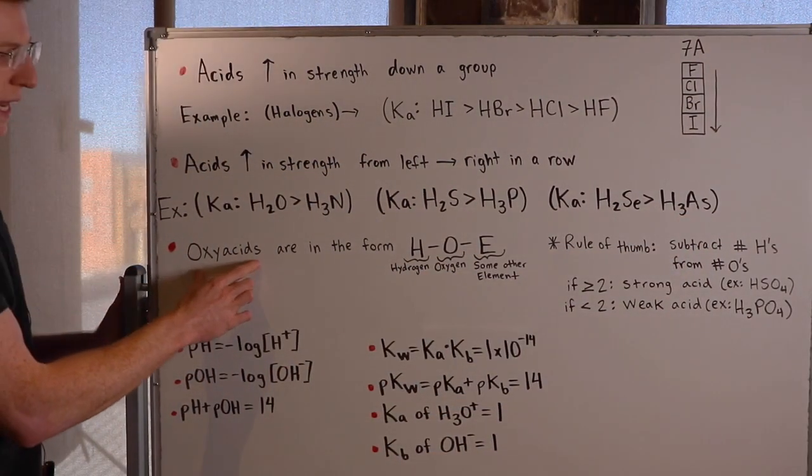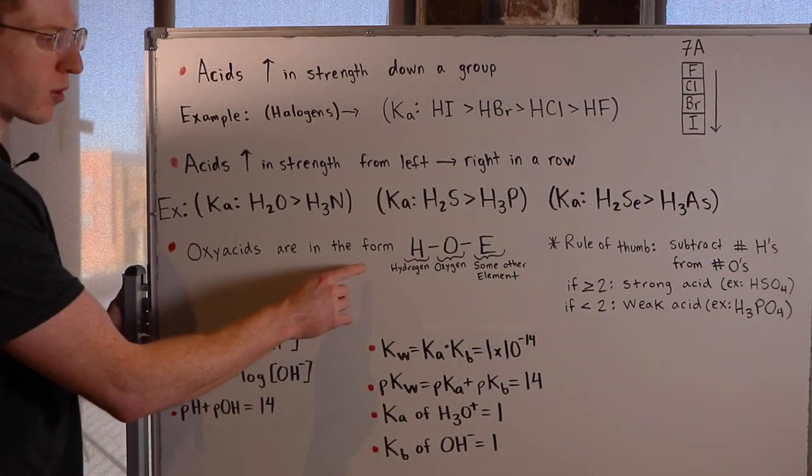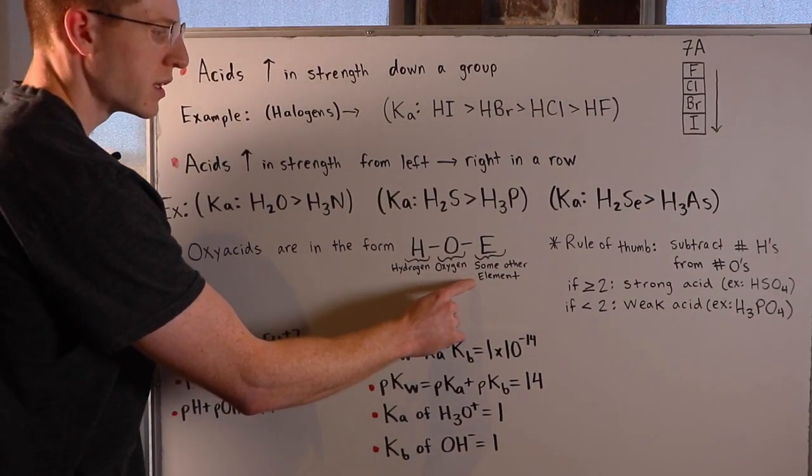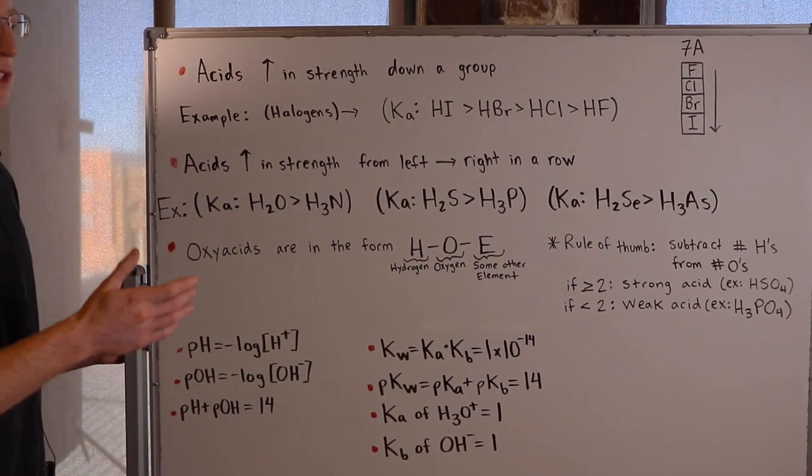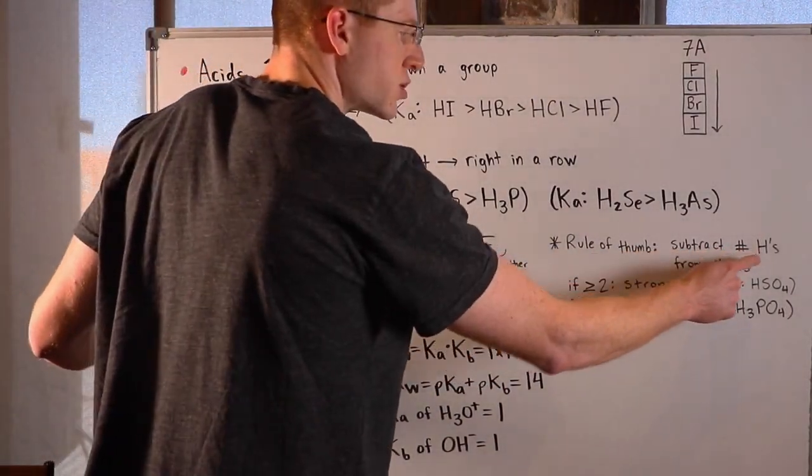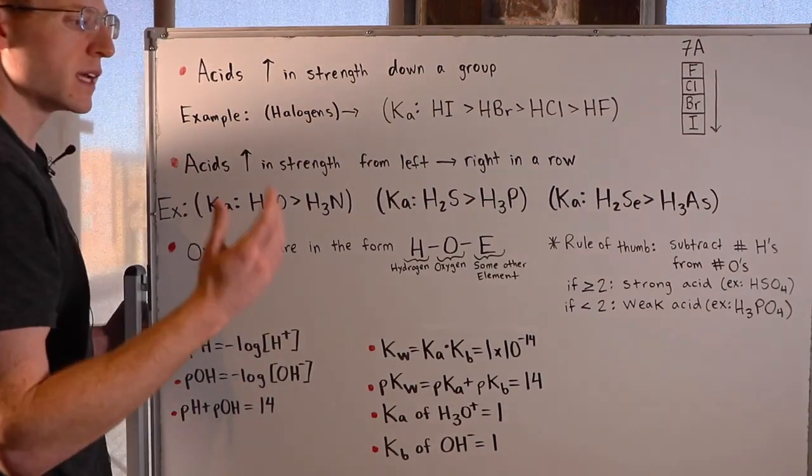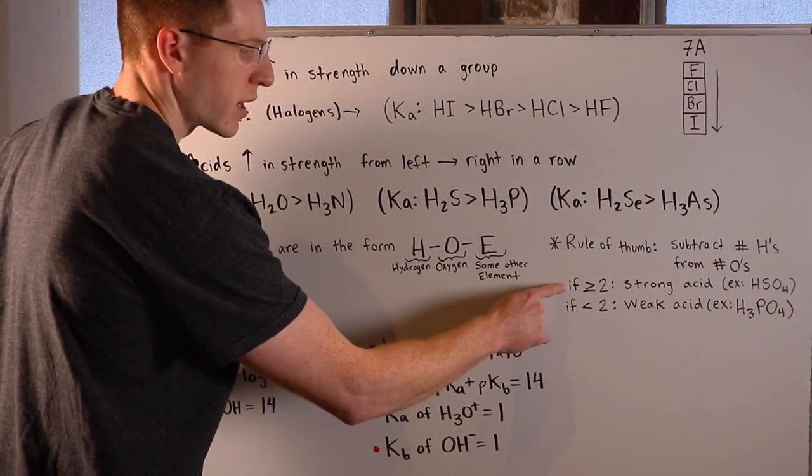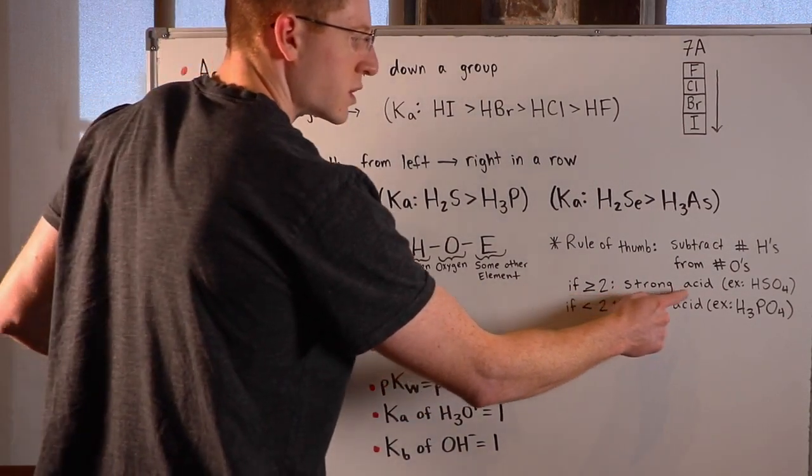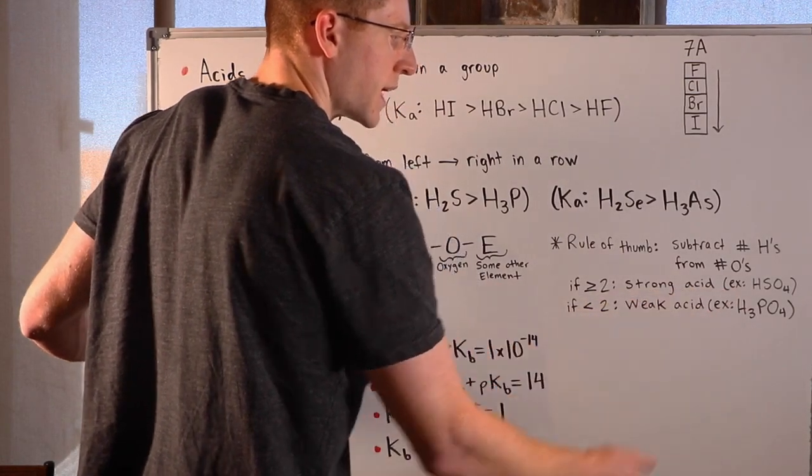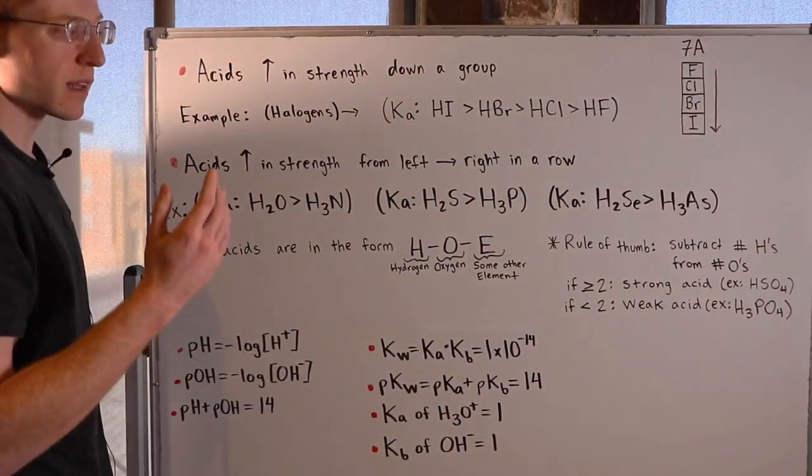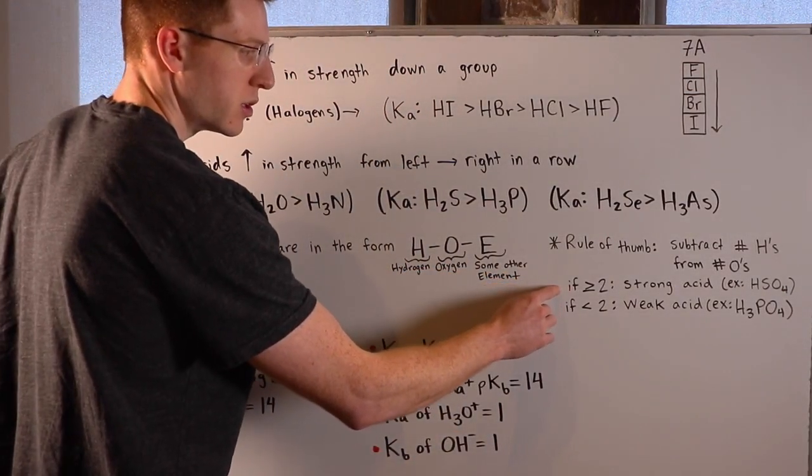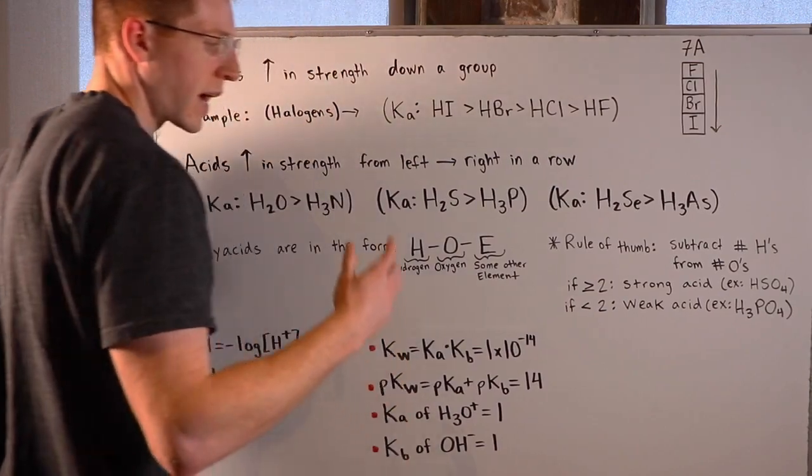Next let's look at oxyacids. Oxyacids are in the form hydrogen, oxygen, and some other element. A good rule of thumb for oxyacids is that if you subtract the number of hydrogens from the number of oxygens in the acid, and you get a number greater than or equal to 2, then you have a strong acid. For example, H2SO4. If I subtract 1 hydrogen from 4 oxygens, I get 3. That's greater than or equal to 2, so H2SO4 is a strong acid.